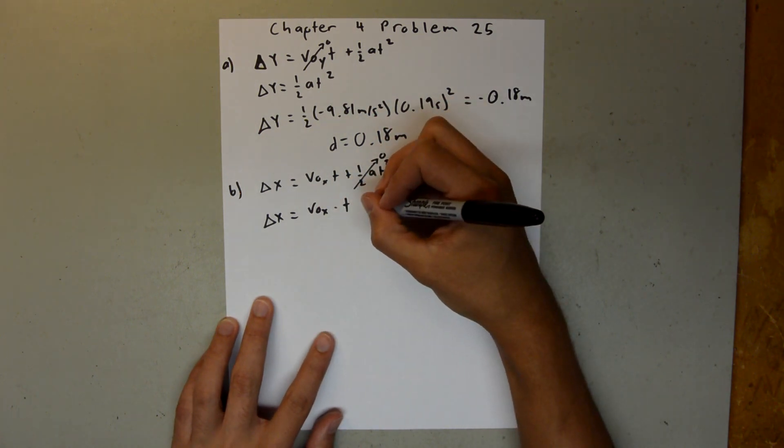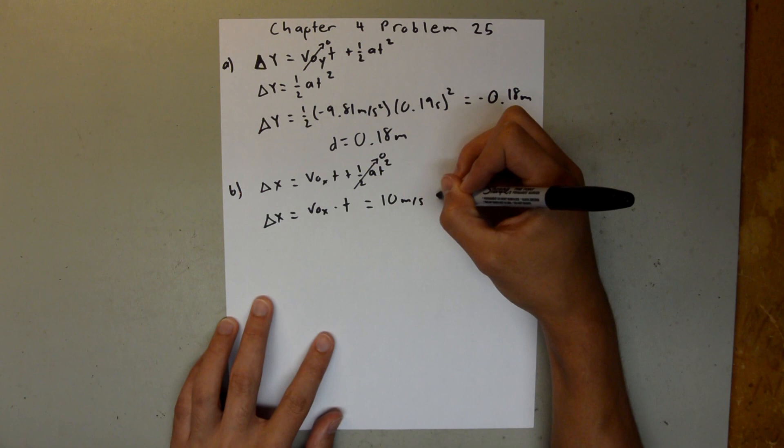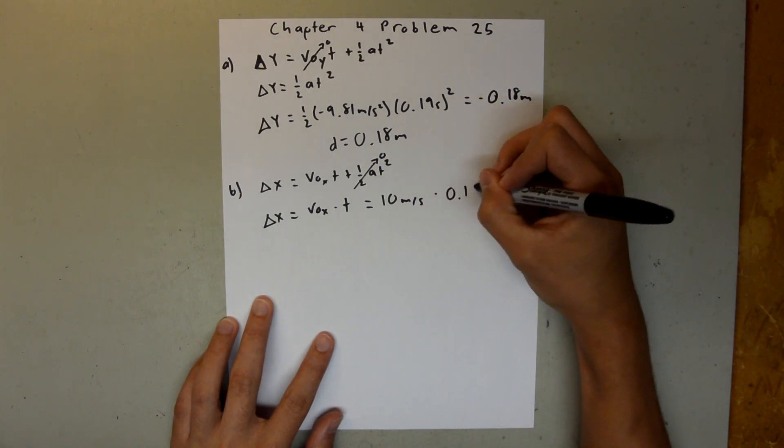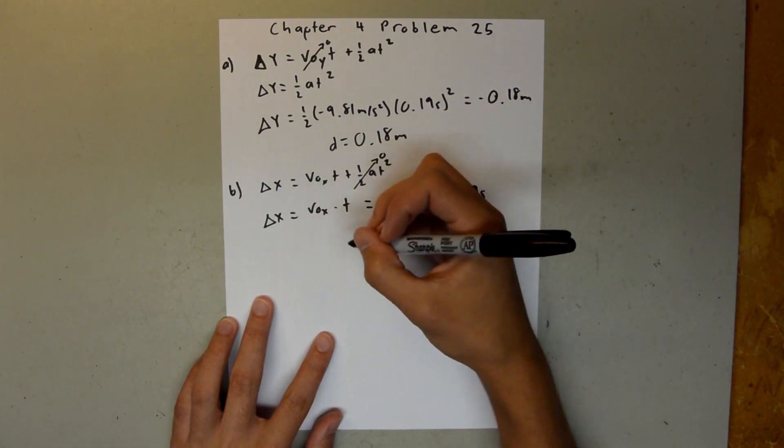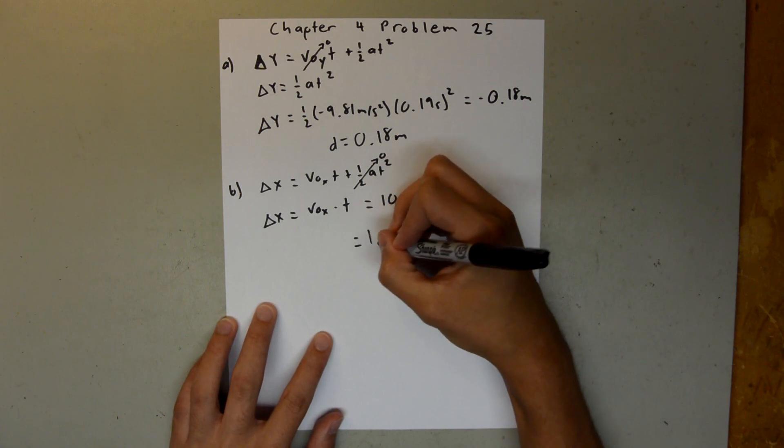And then delta x is just equal to the initial velocity in x times t, which both of these values we have. So this is equal to 10 meters per second times 0.19 seconds, and when you plug that into your calculator, you should get 1.9 meters.